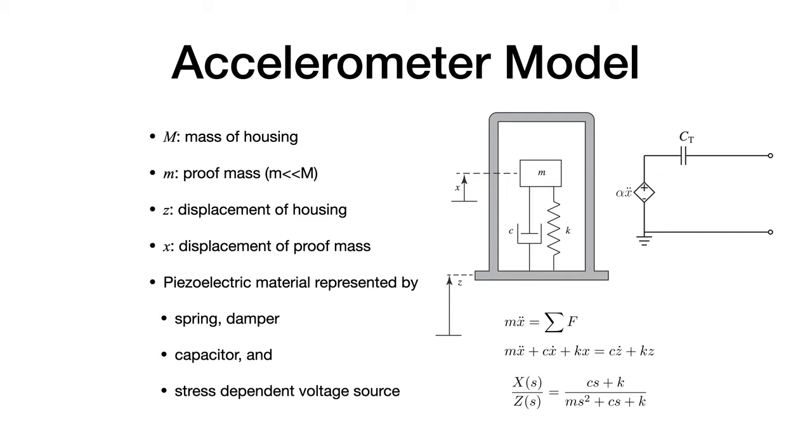With this transfer function, we can multiply numerator and denominator by s squared to get the acceleration of the proof mass as the output over the acceleration of the housing as the input.